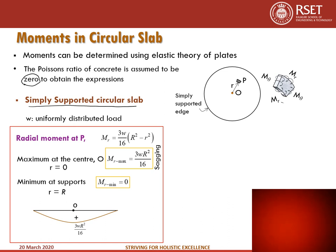For a simply supported slab, where the edge may be resting on a brick wall, the radial moment M_R at any point P is given by: M_R = (3w/16)(R² - r²), where R is the radius of the circular slab and r is the radial distance from the center to point P. The maximum value is at r = 0, giving 3wR²/16, and the minimum value is 0 at r = R, that is at the support.